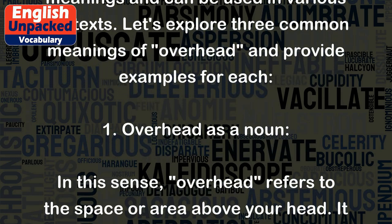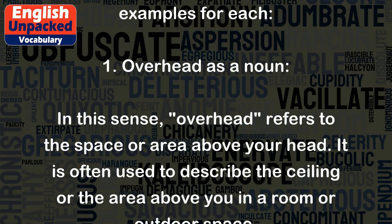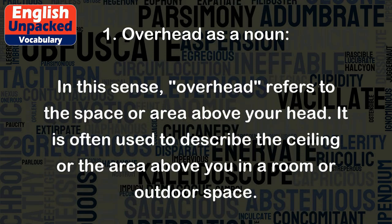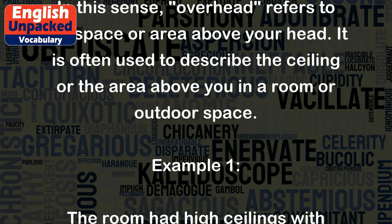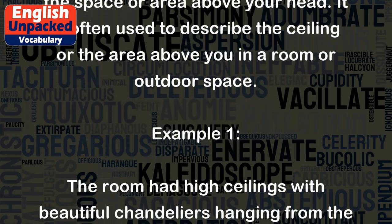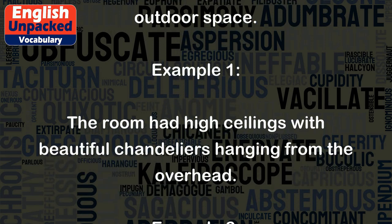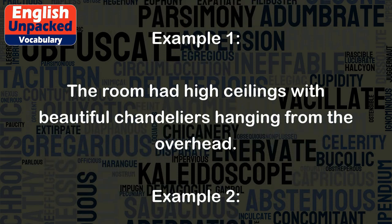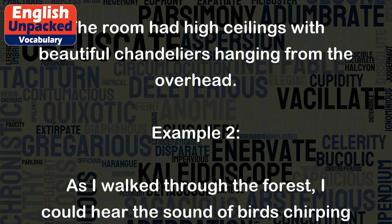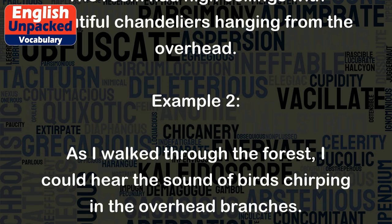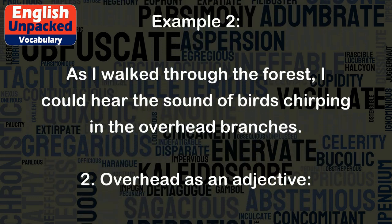1. Overhead as a noun. In this sense, overhead refers to the space or area above your head. It is often used to describe the ceiling or the area above you in a room or outdoor space. Example 1: The room had high ceilings with beautiful chandeliers hanging from the overhead. Example 2: As I walked through the forest, I could hear the sound of birds chirping in the overhead branches.